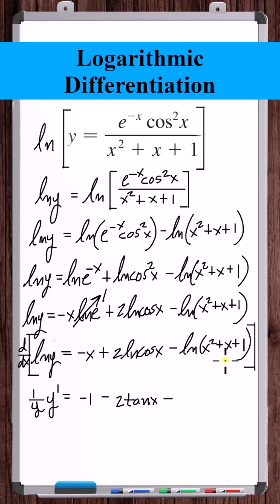Derivative of natural log of x squared plus x plus one is one over x squared plus x plus one times derivative of x squared plus x plus one is two x plus one.